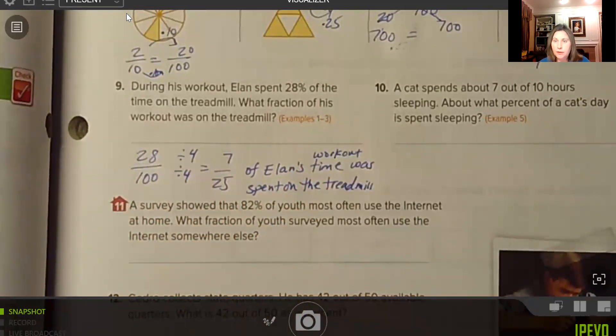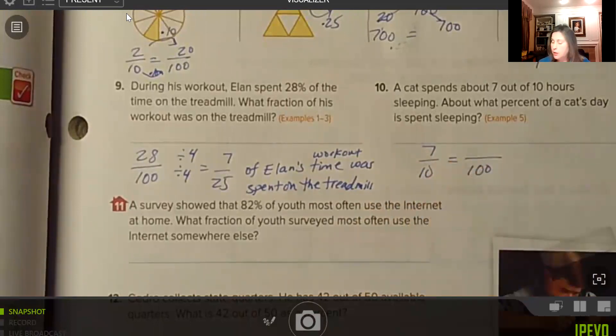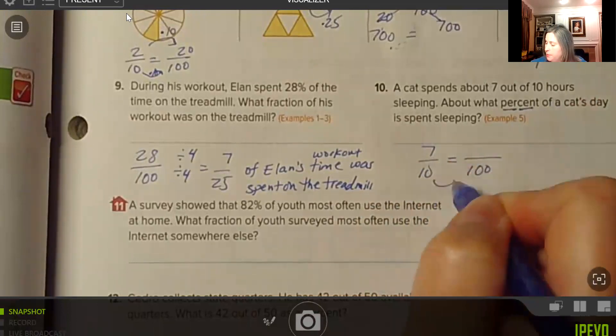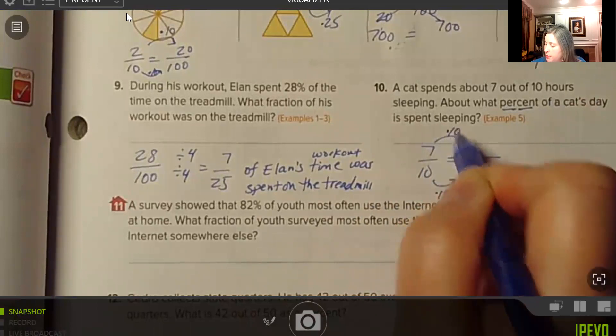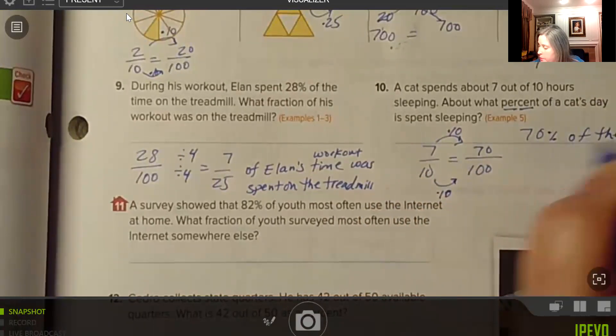Number 10, a cat spends about 7 out of 10 hours sleeping. About what percent of a cat's day is spent sleeping? So 7 out of 10, and we would just want to make that into a percentage. So that's per 100 because percent means per 100. So this is multiplied by 10 in our denominator, we just need to do the same thing to our numerator. So 70% of the day is spent sleeping by the cat.